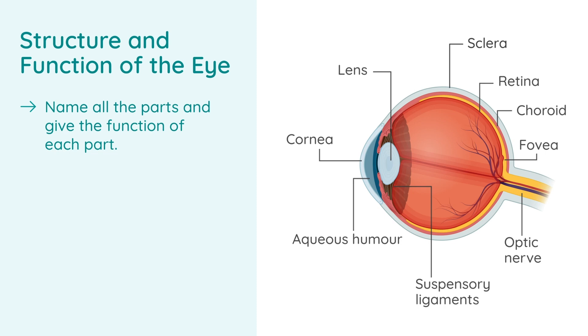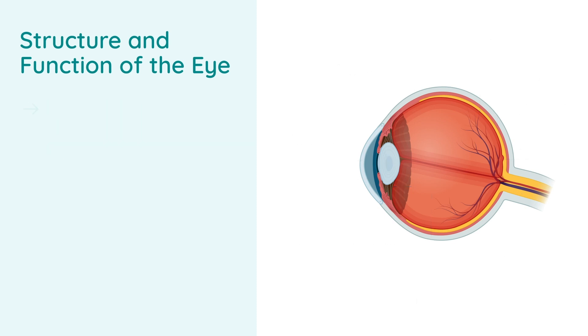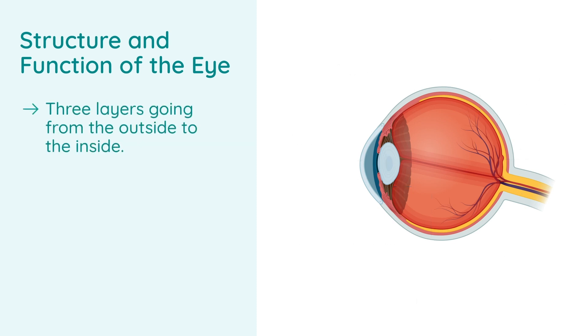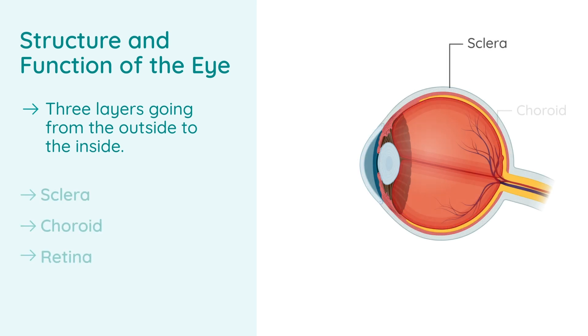Let's start on the outside of the eye. You'll see that there are three layers going from the outside to the inside: the sclera, the choroid, and the retina.